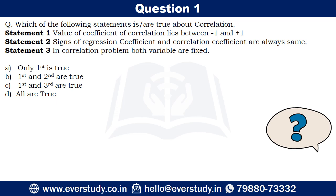Question number one: which of the following statements are true about correlation? Statement one: the value of coefficient of correlation lies between minus one and plus one. Statement two: signs of regression coefficient and correlation coefficient are always the same. Statement three: in a correlation problem, both variables are fixed. Write down your answer.